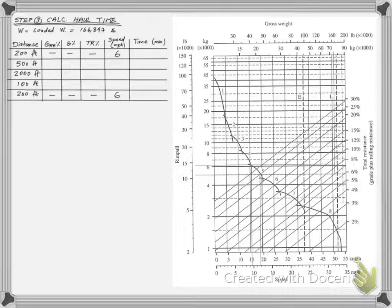Each of these initial segments have an average speed of 6 miles per hour, regardless of the rolling and grade resistance.